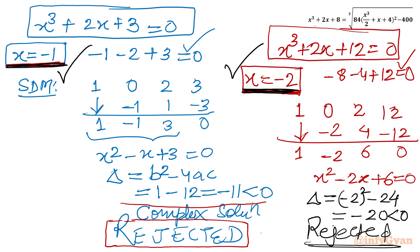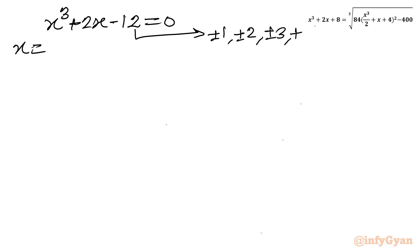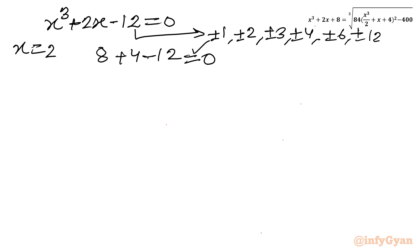Now let us check the third cubic equation from T = 20: x³ + 2x − 12 = 0. Using the rational root theorem with factors ±1, ±2, ±3, ±4, ±6, ±12. Putting x = 2: 2³ + 2(2) − 12 = 8 + 4 − 12 = 0. Yes! So x = 2 is the base solution for this cubic equation.